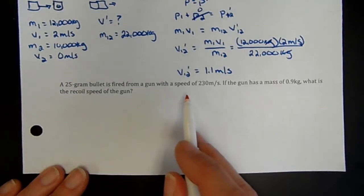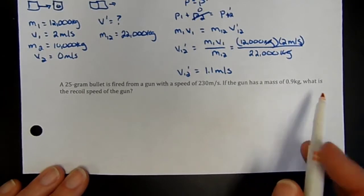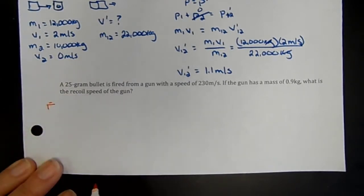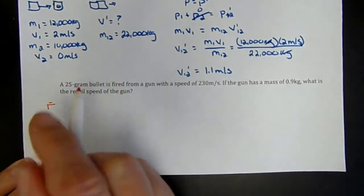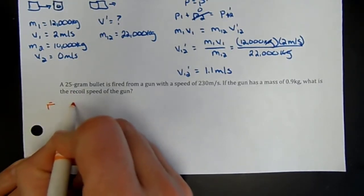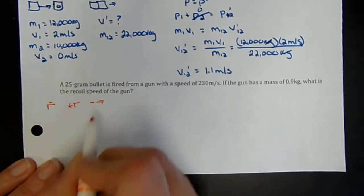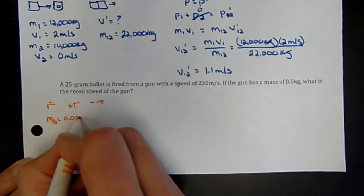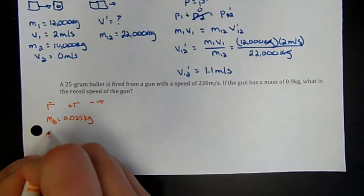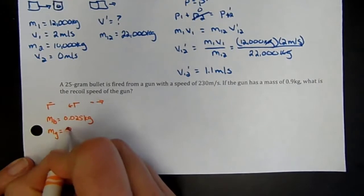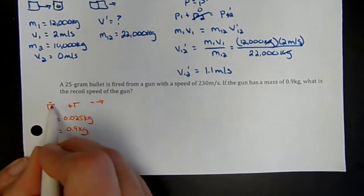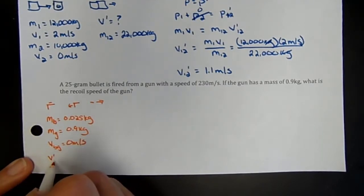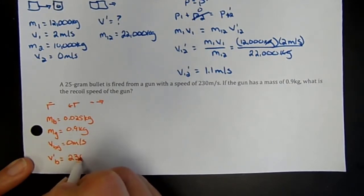In the next problem, a 25-gram bullet is fired from a gun at 230 meters per second. The gun has a mass of 0.9 kilograms. What is the recoil speed of the gun? Initially the gun and bullet are together at rest. After firing, the bullet goes forward and the gun recoils backward. The mass of the bullet is 0.025 kilograms, and the initial velocity of both is 0, while the final velocity of the bullet is 230 meters per second.